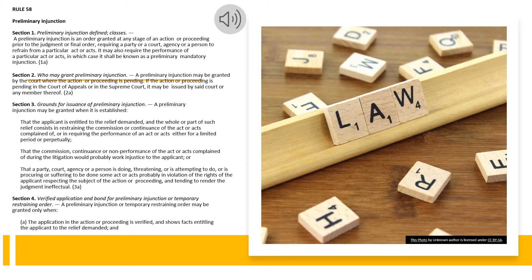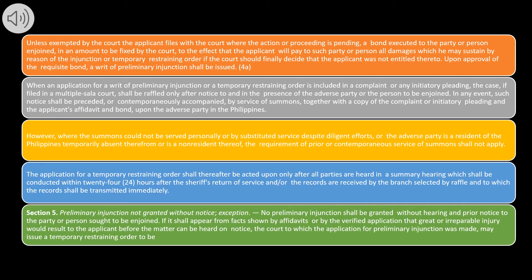Section 4. Verified Application and Bond for Preliminary Injunction or Temporary Restraining Order. A preliminary injunction or temporary restraining order may be granted only when: (a) the application in the action or proceeding is verified, and shows facts entitling the applicant to the relief demanded; and unless exempted by the court, the applicant files with the court a bond executed to the party or person enjoined, in an amount to be fixed by the court, to the effect that the applicant will pay all damages which he may sustain by reason of the injunction or temporary restraining order if the court should finally decide that the applicant was not entitled thereto. Upon approval of the requisite bond, a writ of preliminary injunction shall be issued.